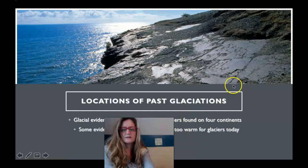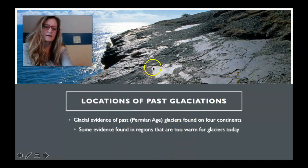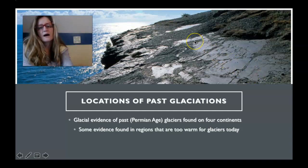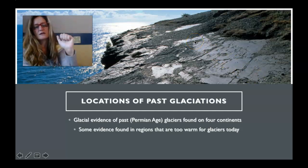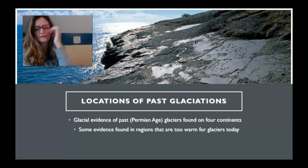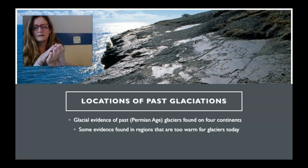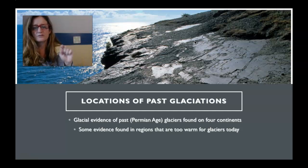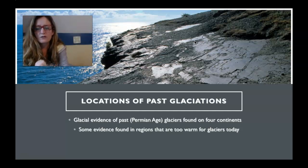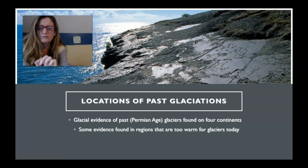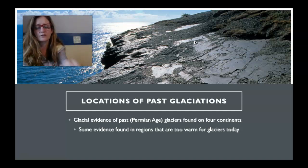Another piece of evidence was glaciations. In this image you can see striations — scratches made in bedrock by rocks embedded in ice. Ice deep in a glacier acts like a rock with clasts or pebbles embedded in it. Those get embedded and act like sandpaper across these surfaces, polishing the surface and making those scratches. Wegener was able to match up these striations and their orientation across continents.